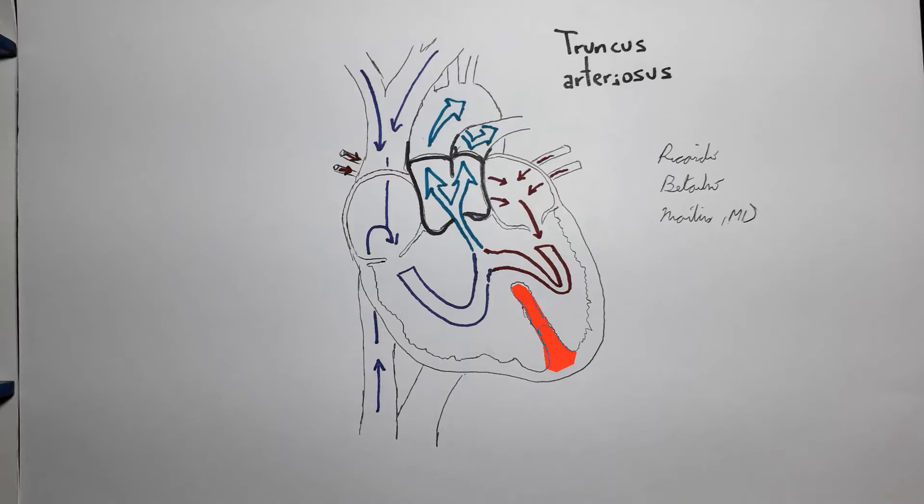Anatomically, in the presence of truncus arteriosus, the pulmonary arteries can arise either directly from the truncus arteriosus, which is the same structure that will give rise to the aorta, or from the distal pulmonary trunk division of the truncus arteriosus. There is usually a single semilunar valve, called truncal valve, that often includes dysplastic or supranumerary leaflets.